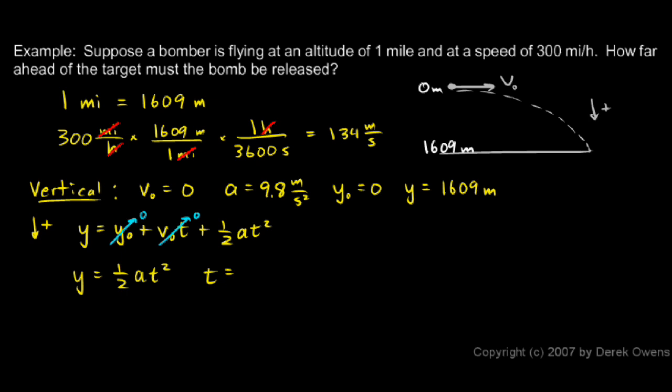And we can solve this for t. t ends up, when we do the math, ends up being the square root of 2y over a. And that's the square root of 2 times 1,609 meters divided by the acceleration of 9.8 meters per second squared. And I put all those numbers into my calculator, multiply, divide, take the square root, and I get a time of 18 seconds. So that's how long it takes the bomb to fall.